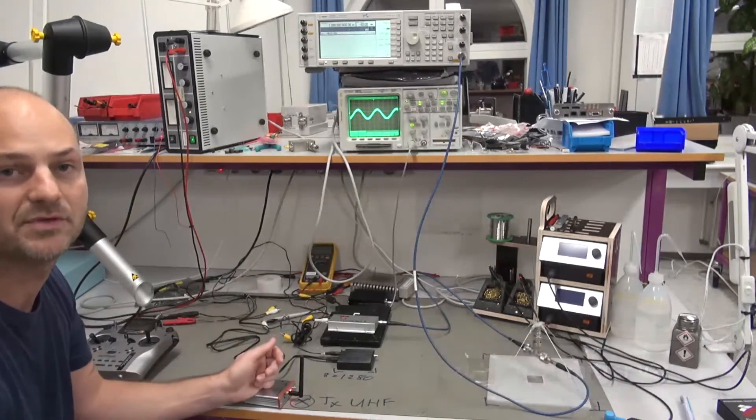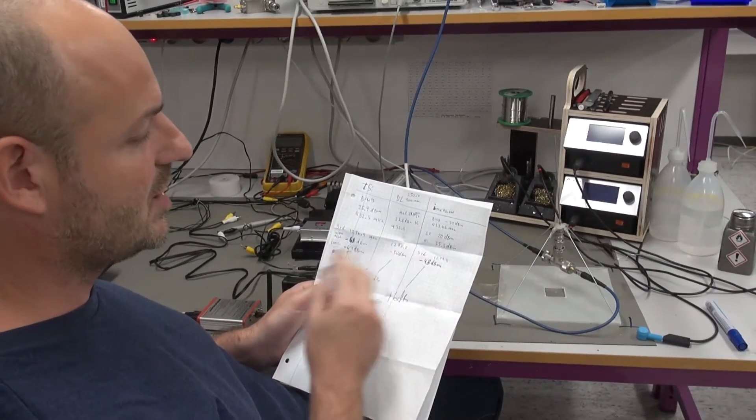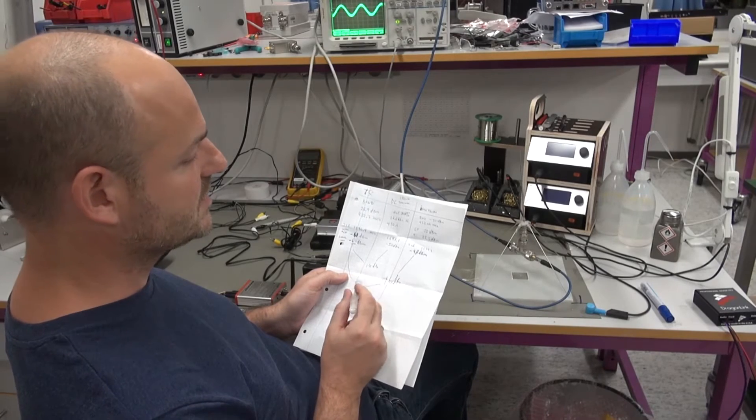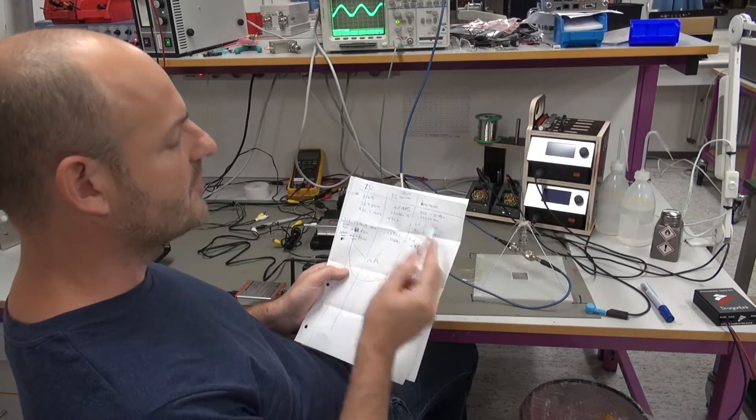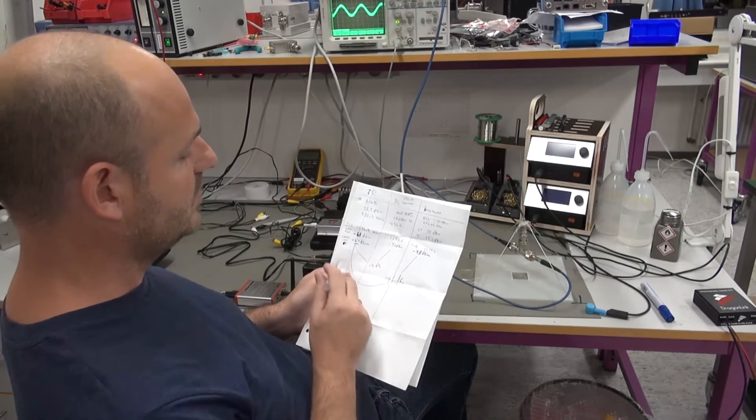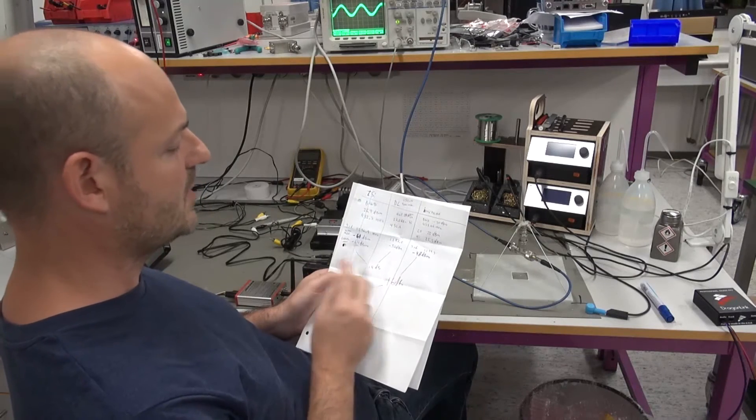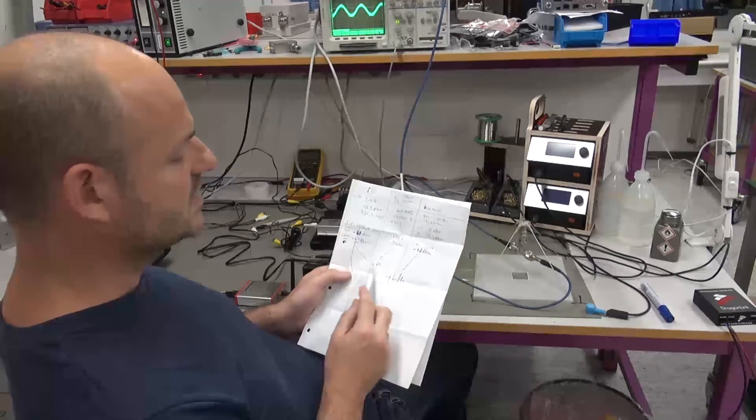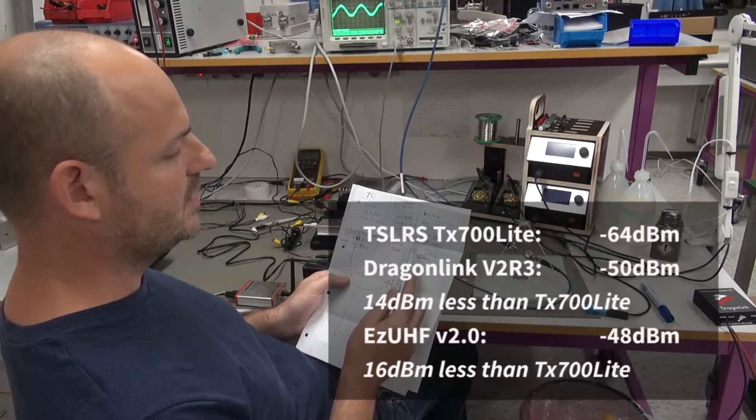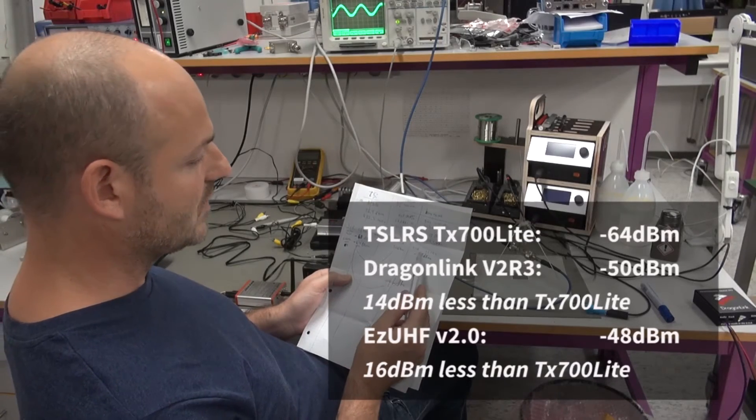I'm sorry about this bad handwriting. This is just a very fast resume of all we have been tested today about the third harmonic. The Thomas Shara system was the best on harmonics. The level of the harmonics is 14 dB better than the Dragon Link and 16 dB better than the Immersion system.